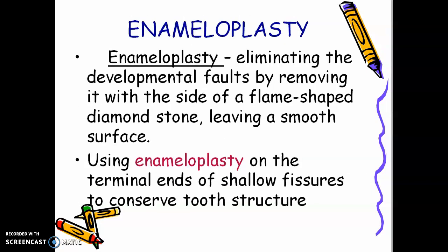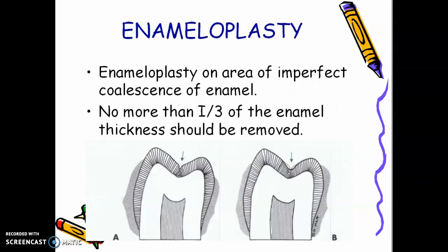As a supplementary lesson, let me add enameloplasty. Enameloplasty is eliminating developmental faults by removing them with the side of a flame-shaped diamond stone, leaving a smooth surface. Sometimes there are abnormal grooves on the facial surface of anterior or posterior teeth; you can use a flame-shaped burr to remove the pit. You should remove only up to one-third of the enamel thickness — no deeper, as that would reach the dentine.